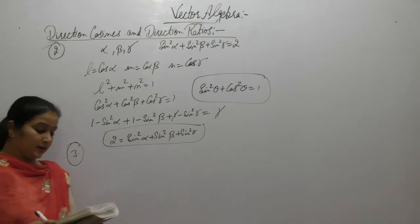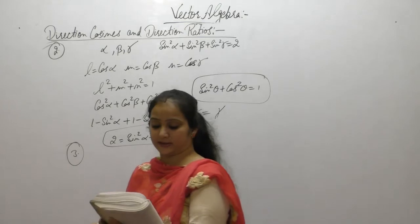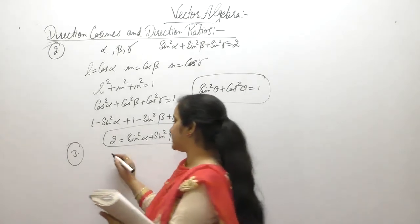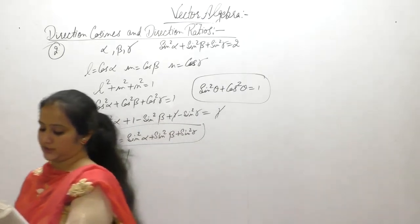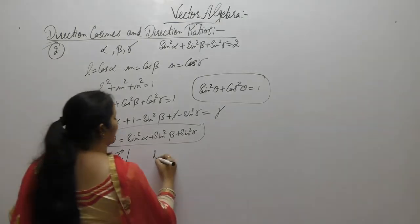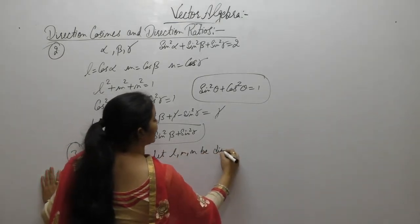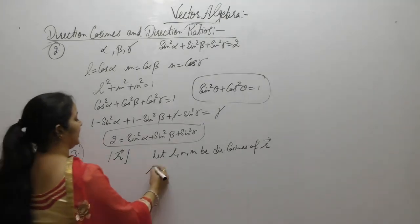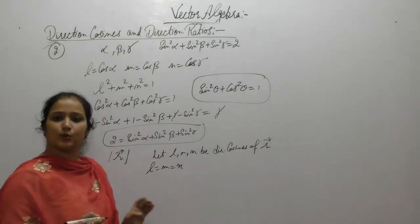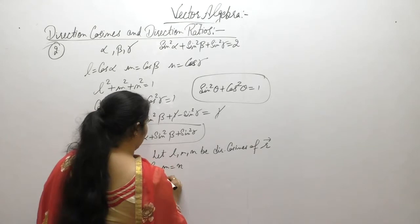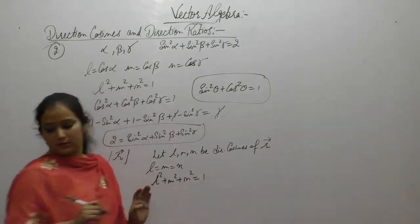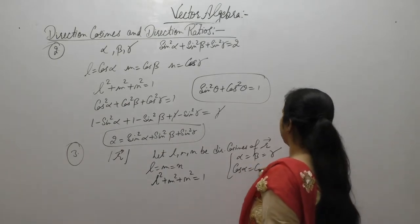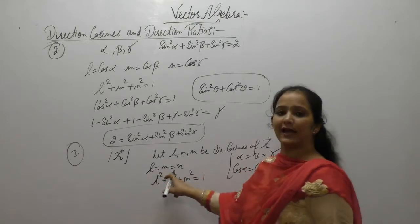Third problem: Find the direction cosines of vector R which is equally inclined with OX, OY and OZ. If |R| is given, find the total number of such vectors. Let l, m, n be the direction cosines of R. Since the vector is equally inclined, α = β = γ, therefore cos(α) = cos(β) = cos(γ), so l = m = n.